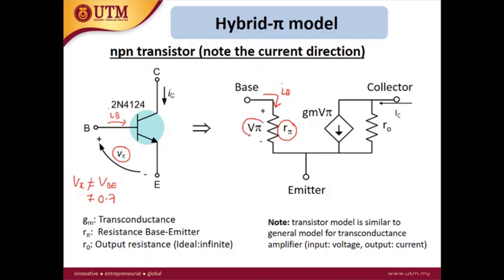The voltage across RPI is VPI, so VPI equals IB times RPI. Between the emitter and collector we have a dependent current source to represent the relationship between IC and IB. In this model, the collector current depends on the value of VPI, showing that the collector current is controlled by the base-emitter voltage.